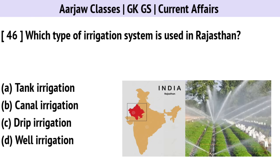Which type of irrigation system is used in Rajasthan? The correct option is C — Drip irrigation.